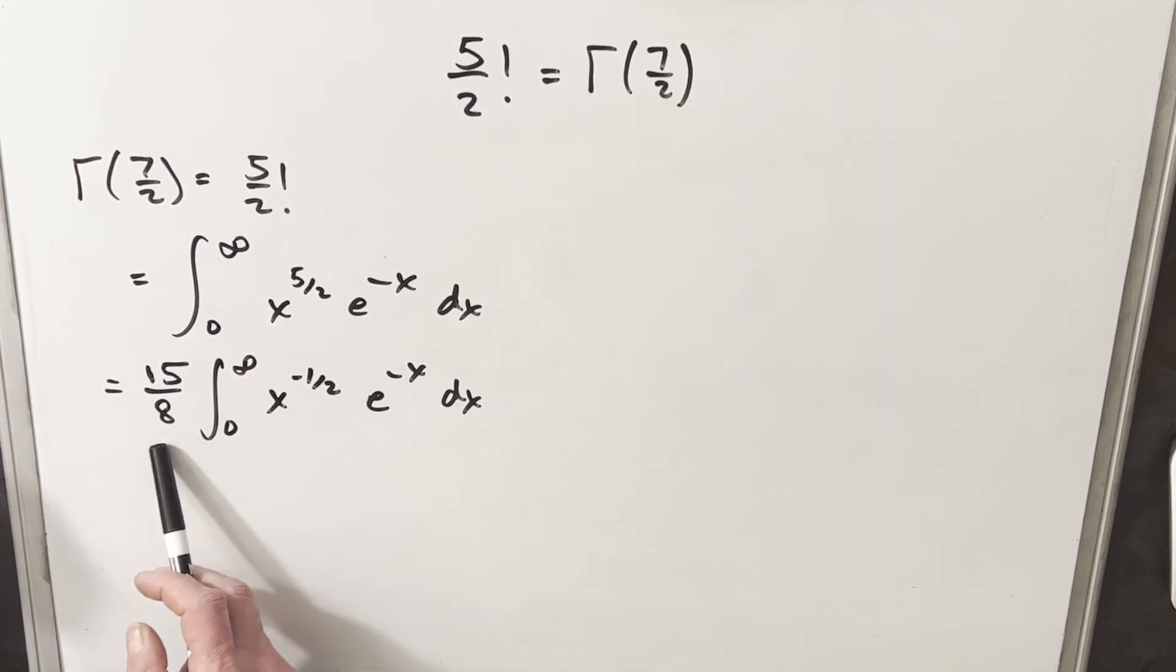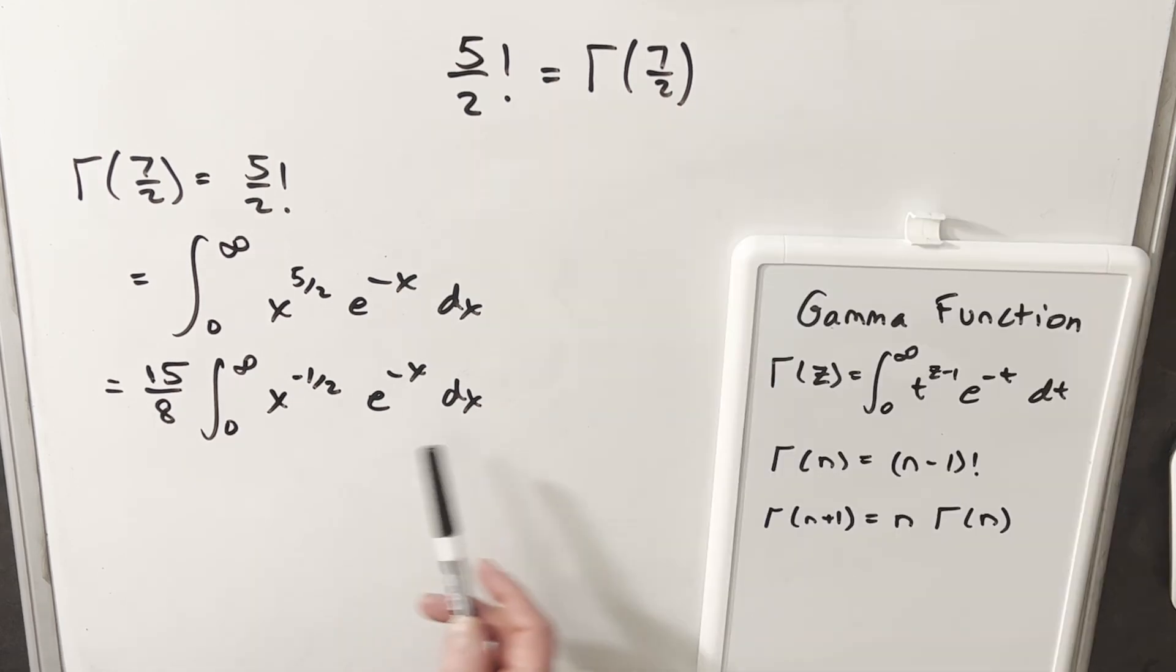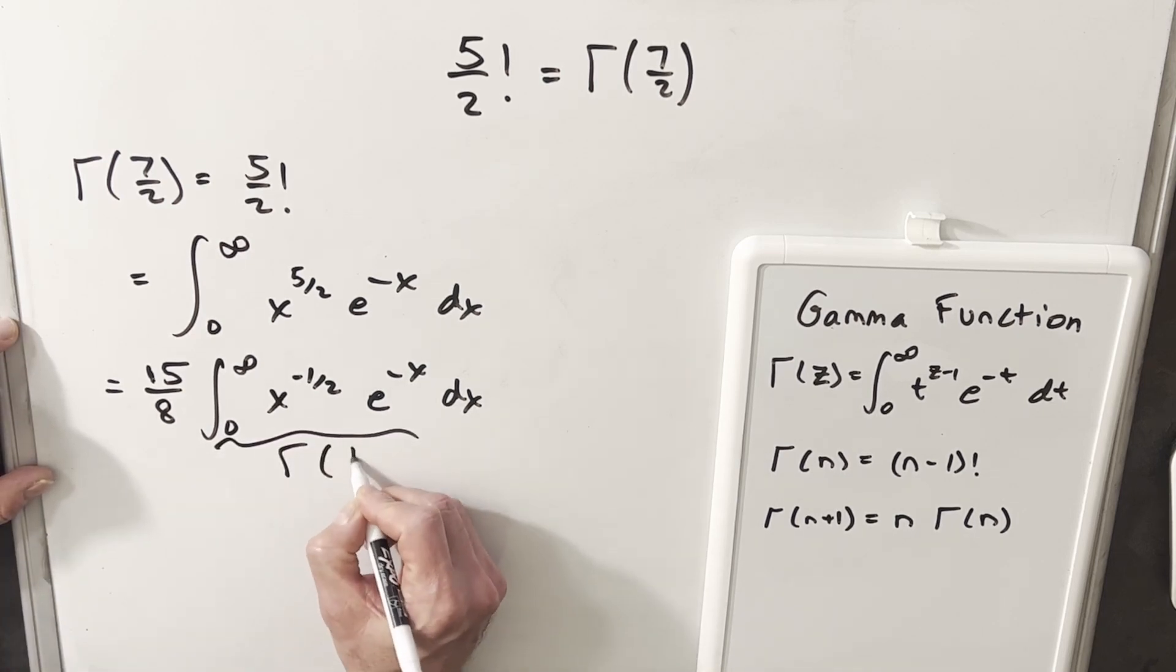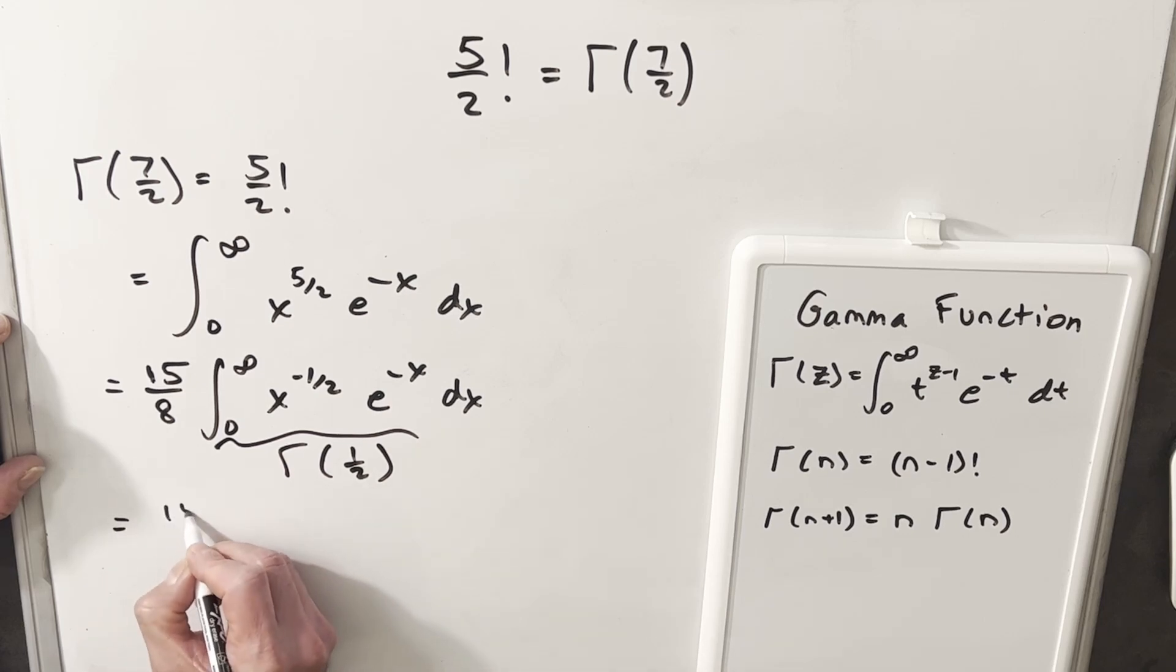At this point we've reduced this integral to 15 over 8. What are we going to do with this integral though? Let's go back to our gamma function and notice that this thing, we could express this in terms of the gamma function. If you looked at the gamma of one half, you plug a half in for that z, you have the exponent of minus one half. So this whole thing is actually just the gamma of one half, and so what we're trying to find then is 15 over 8 times gamma of one half.